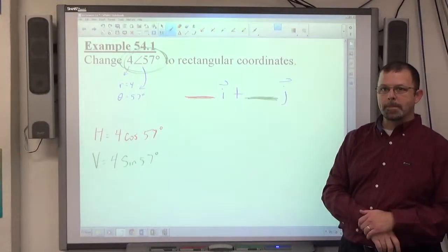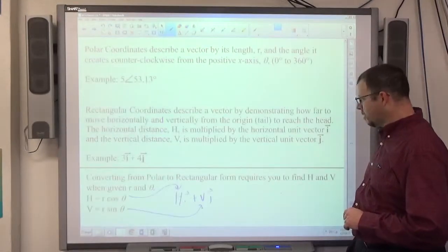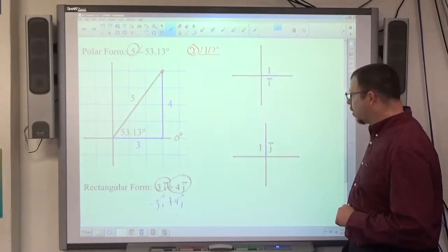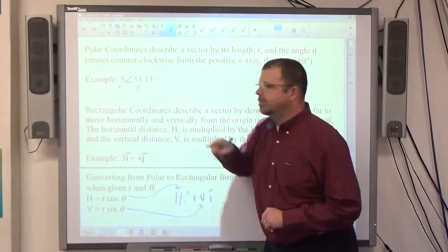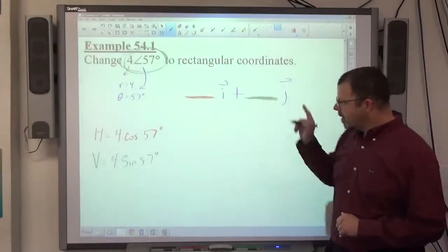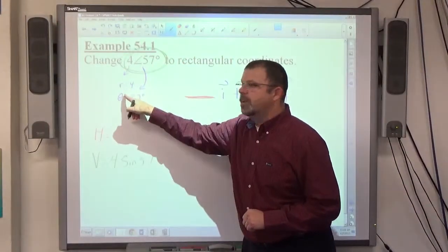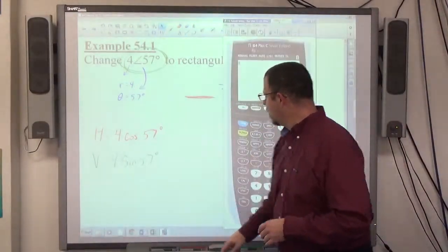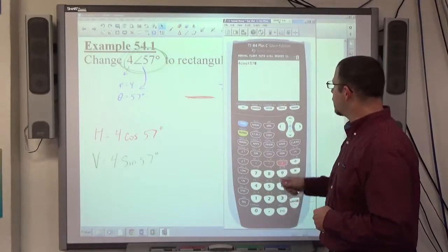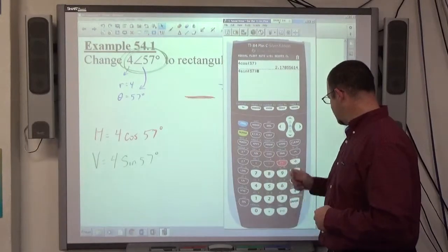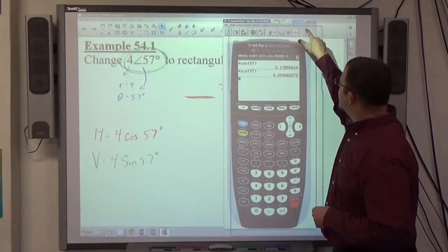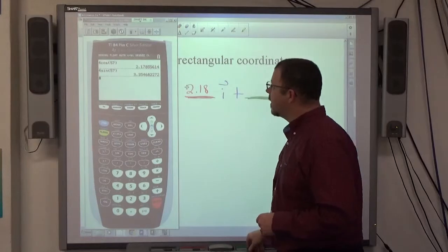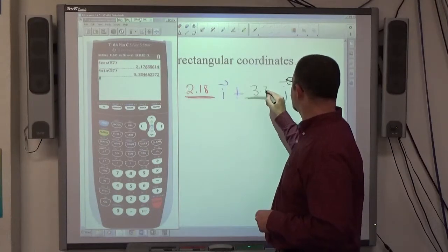The two numbers we need are going to be given to us. If it says convert this polar form to rectangular form, the polar form gives you the two numbers you need. Then you use your calculator to evaluate. So, if I type in 4 cosine 57 in parenthesis equals, and I type in 4 sine 57 in parenthesis equals, I get 2.18 for h. And I get positive 3.35 for j.